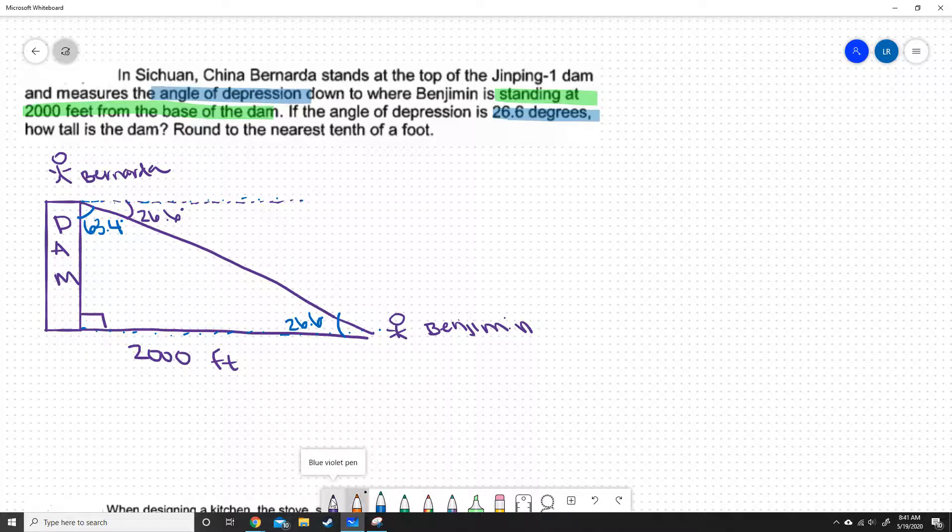Ultimately, we are searching for the height. We are searching for this here, and I'm going to label it y just because it's vertical. So we are searching for this y value here. And if we have this angle, we have opposite, and we have adjacent.